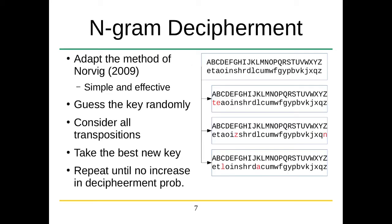Using this idea of n-gram language models to tell you if what you've deciphered is correct, Norvig in 2009 suggested a simple method. Essentially, generate a key — just randomly shuffle letters around — and then consider all the transpositions of that key, all the swaps, and take the best swap, and use that as a new key. Each time you do a swap, you evaluate it: you basically get the probability of it occurring from the model. The one that has the highest probability you keep, and then you swap on that until you don't increase in probability anymore.